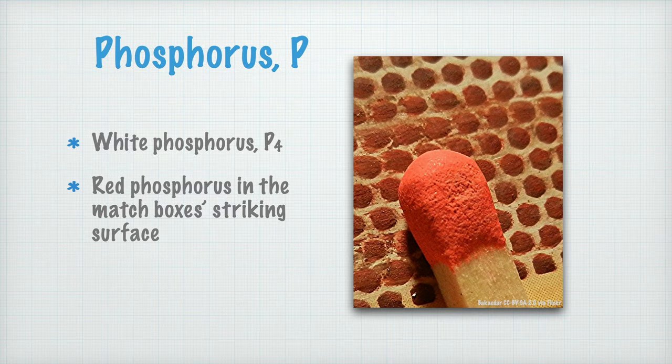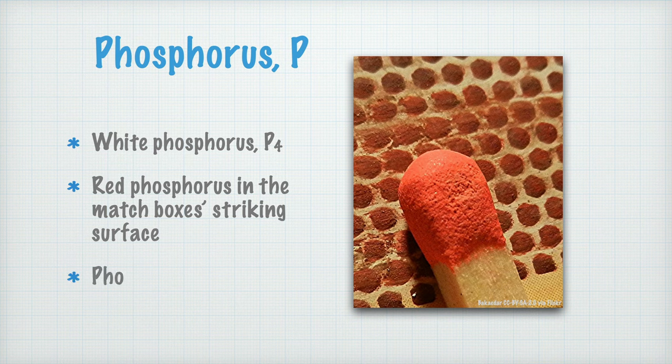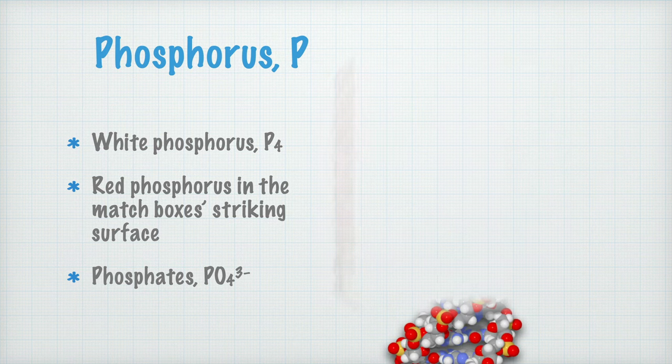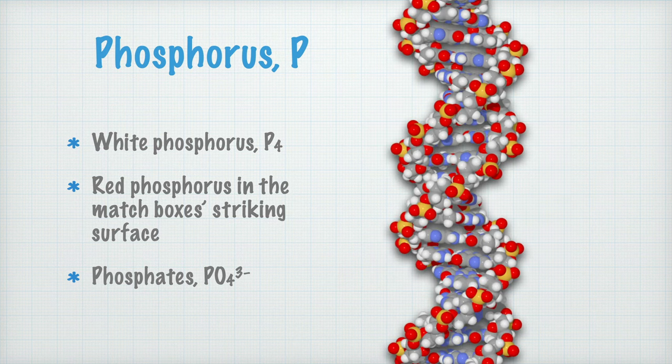When phosphorus reacts with oxygen, different kinds of phosphates form. A phosphate ion has the chemical formula PO4 3-. Phosphates are important for all living organisms. You can see once again in this model of DNA molecule, every little yellow atom here is a phosphorus atom. Phosphates, together with a kind of sugar molecule called ribose, form the backbones of the DNA molecule.